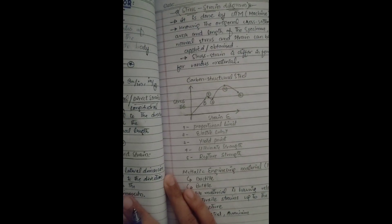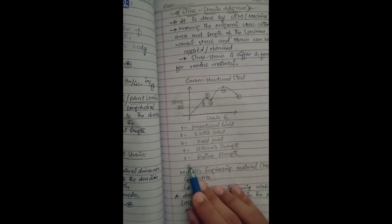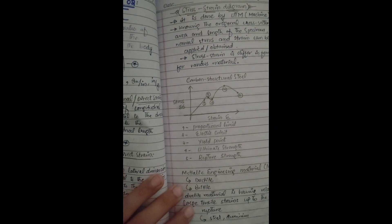The stress-strain diagram is different for various materials. In the diagram, there are key points: first is the proportional limit, second is the elastic limit, third is the yield point, fourth is the ultimate strength, and fifth is the rupture strength. The metallic engineering materials are classified into two types: ductile material and brittle material.